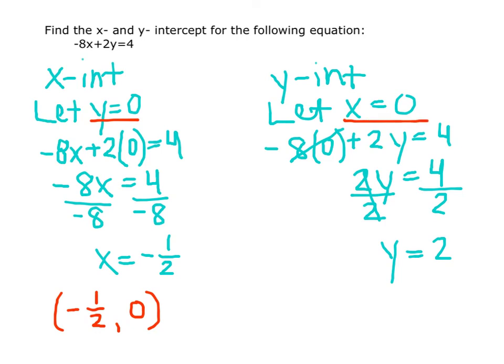x was 0 to begin with, so our coordinate is 0 comma 2. This is our y intercept.